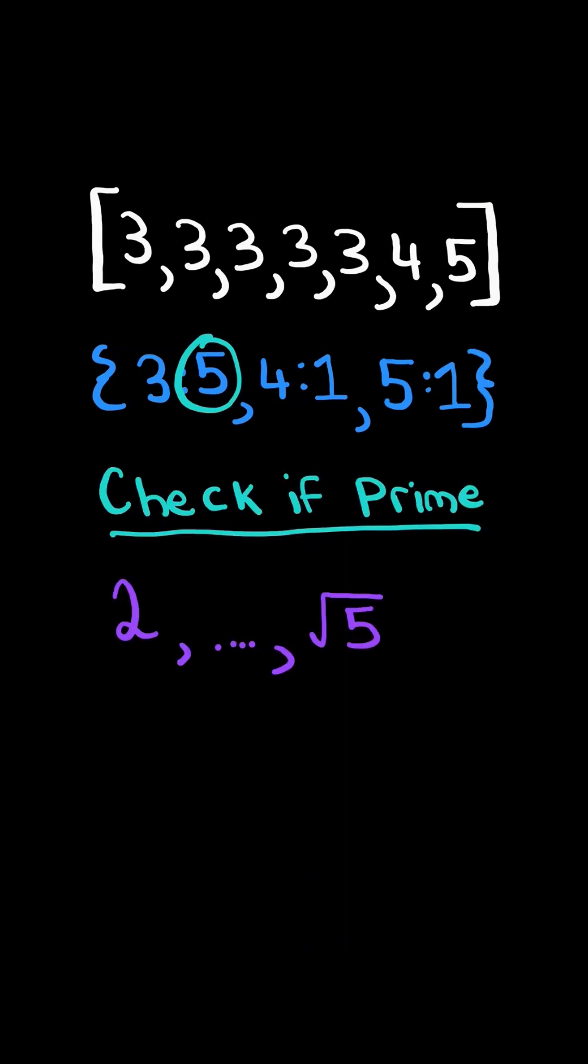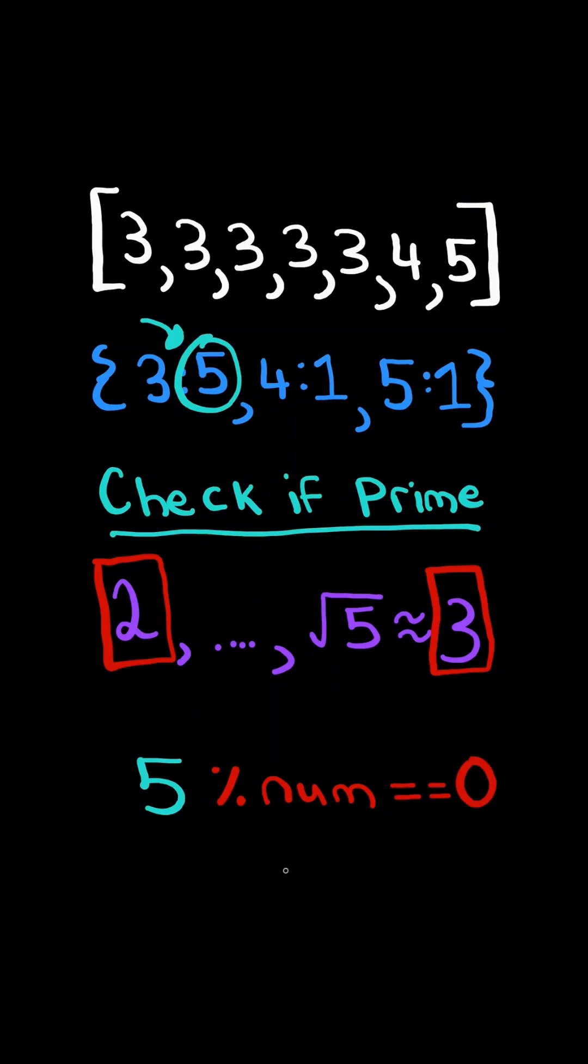We iterate from 2 up to the square root of the frequency, and we round up. We then take the frequency and mod it by the numbers in the range. If it equals 0, then it's not prime, so we return false.